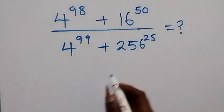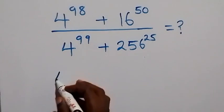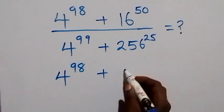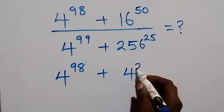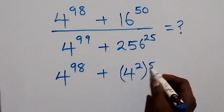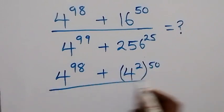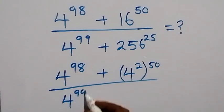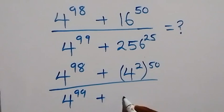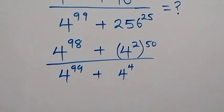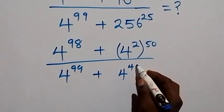From here, let's change everything to base 4. We can write this as 4 raised to power 98, plus here 16 is 4 squared — that's 4 times 4 — then raised to power 50, divided by 4 raised to power 99, plus 256 written as 4 raised to power 4 — that's 4 multiplied by itself 4 times — raised to power 25.